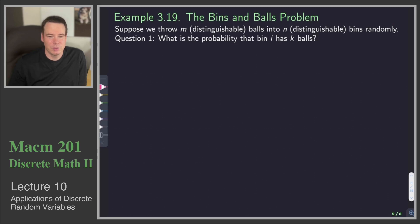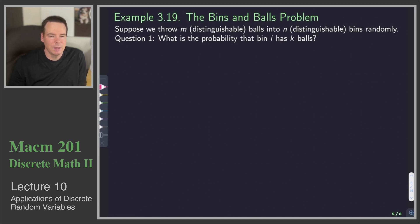We're now ready to get to our first main application, and that's the bins and balls problem. Suppose we throw m distinguishable balls into n distinguishable bins randomly. We want to know the answers to a few questions. The first question is: what is the probability that bin i has k balls?